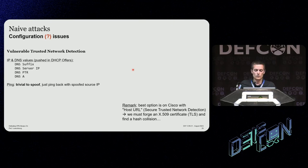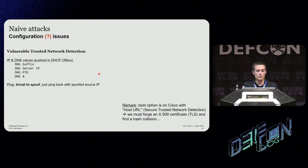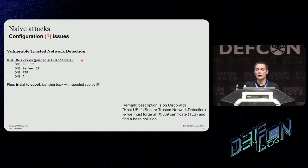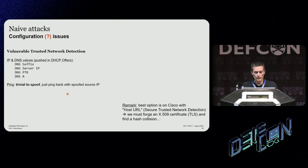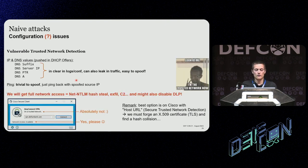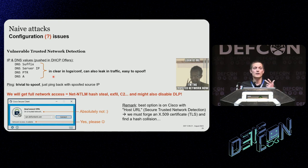Now let's move to the most interesting attack — the most powerful one — because it will completely unlock network access. As I mentioned, trusted network detection for vulnerable agents: I have to insist that Cisco made a nice job because they are the only ones to propose something secure enough. For the others, it's either IP values or DNS values pushed in DHCP offers. There is no authentication on these values, they are written in clear text in the logs or configuration, and they can also leak in the traffic.